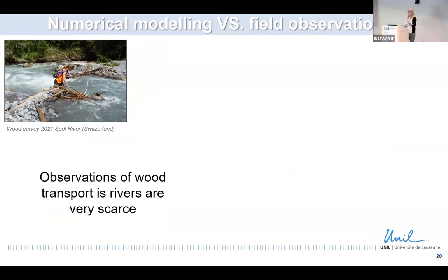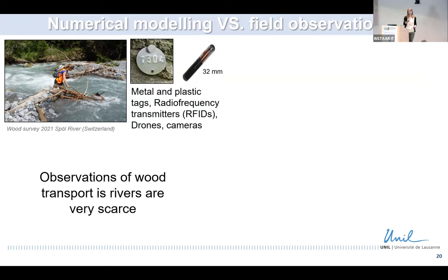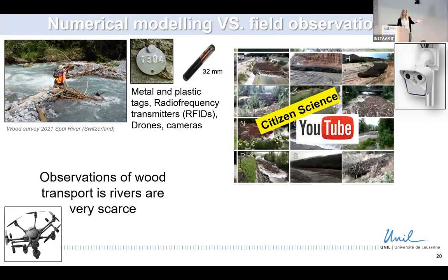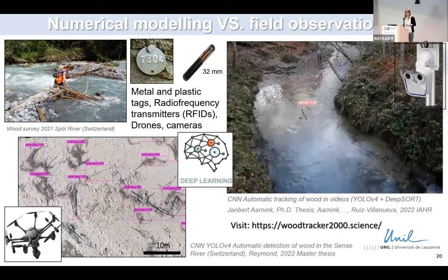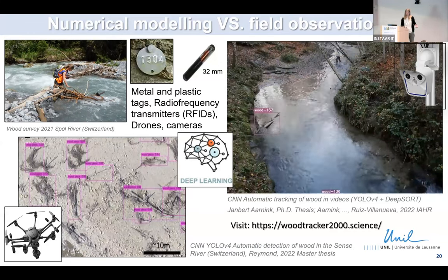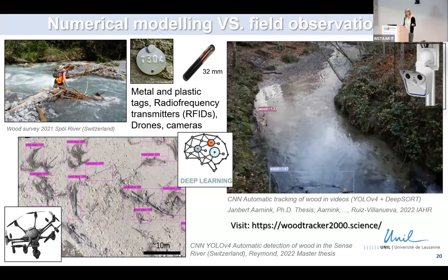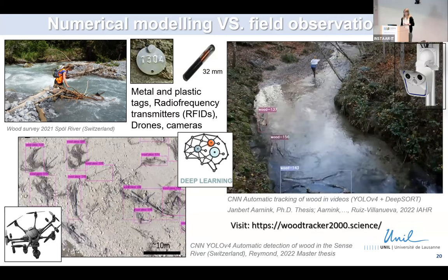Since we lack observations, we are trying to fill this gap with field surveys. We use metal and plastic tags to track wood in rivers, radio frequency transmitters, drones, cameras, and citizen science — extracting quantitative information from videos of people recording floods with lots of wood. We are currently developing machine learning algorithms, using deep learning to automatically detect and track wood in drone imagery and video camera footage, to obtain positional patterns and wood fluxes for model validation.